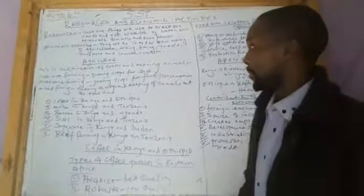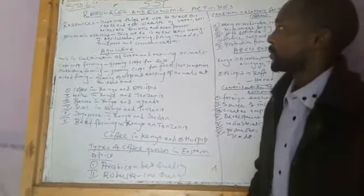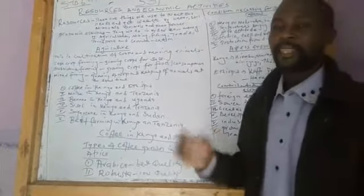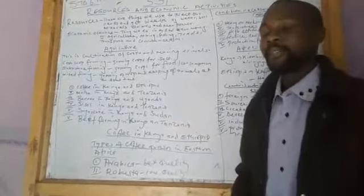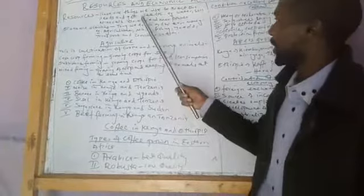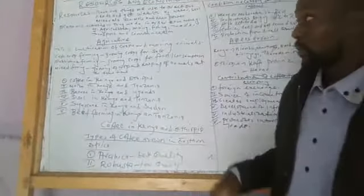So we start by asking ourselves what are resources. Resources are things that we use to meet our needs and get wealth. Examples of these resources include water, soil, minerals, animals and manpower.